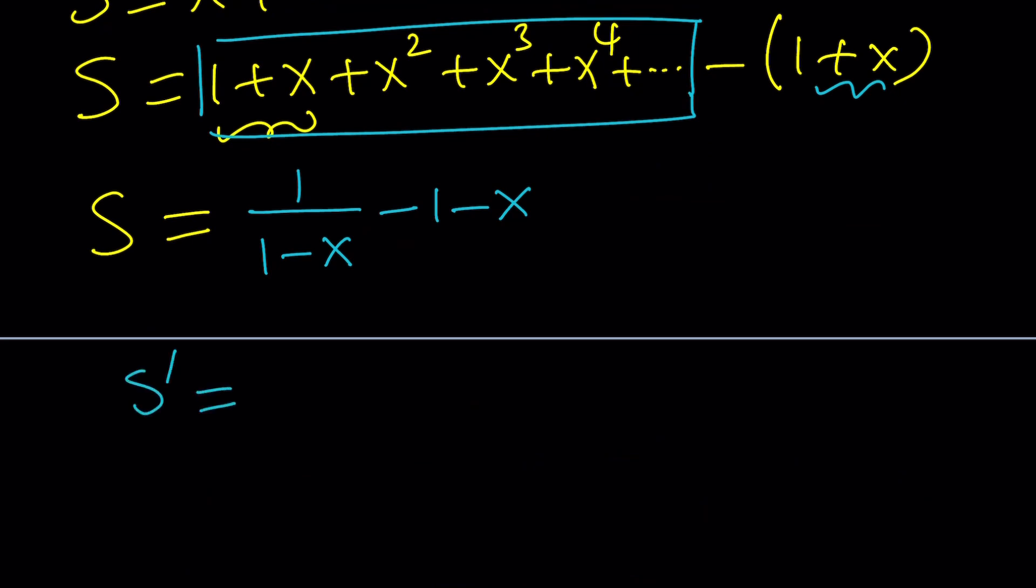If you differentiate this, 1 over 1 minus x, that can be written as 1 minus x to the power of negative 1. And using the power rule, you can differentiate it, and it's going to look like this: 1 over the quantity 1 minus x squared. If you differentiate negative 1, you're going to get a 0 because it's a constant, and the derivative of negative x is just minus 1. So that was easy. We just differentiated S, and we got S prime.